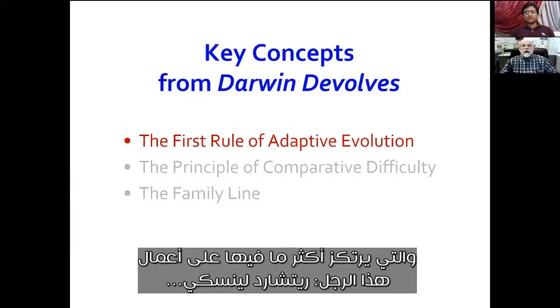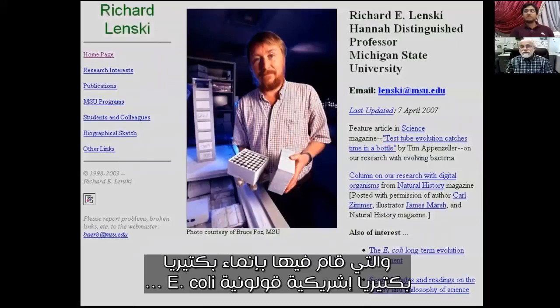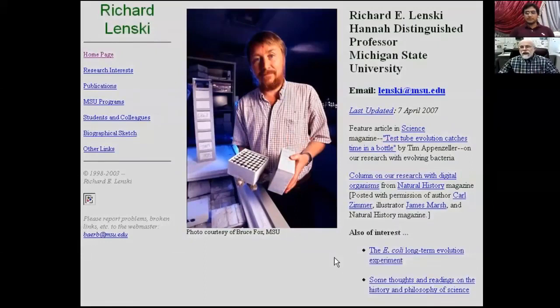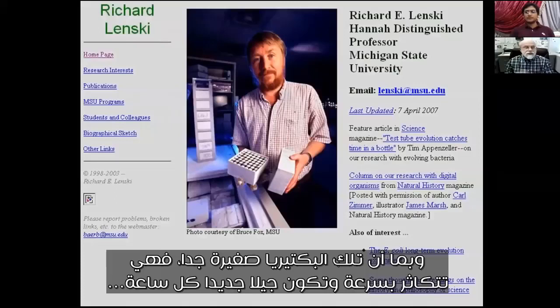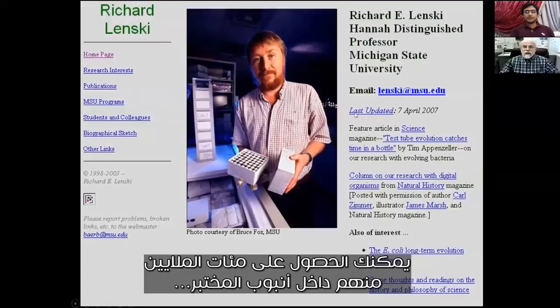The first rule of adaptive evolution is largely based on the work of Richard Lenski, a professor at Michigan State. He has run an experiment for 30 years in which he grew the bacterium E. coli in flasks in his laboratory. Since E. coli bacteria are so small, they reproduce quickly — about one generation per hour — and you can grow hundreds of millions of them in a test tube.